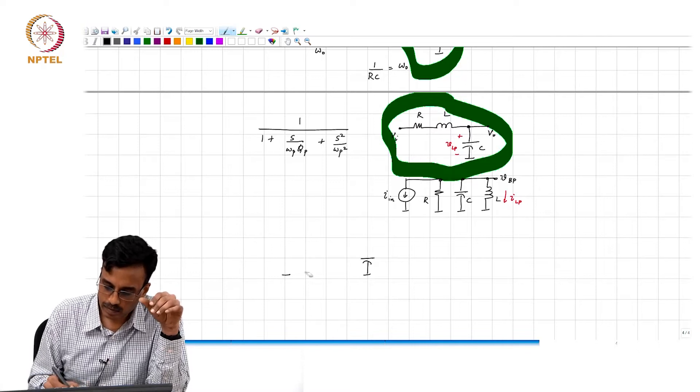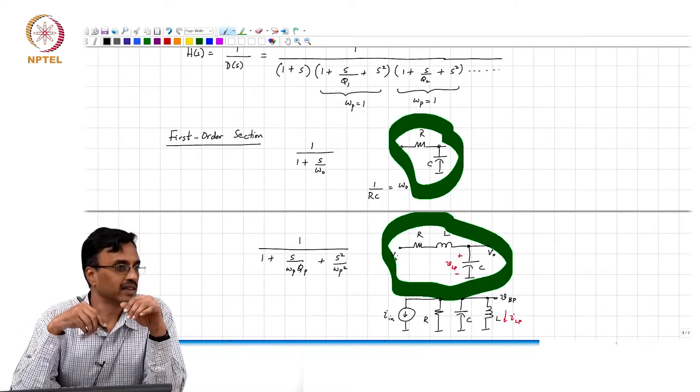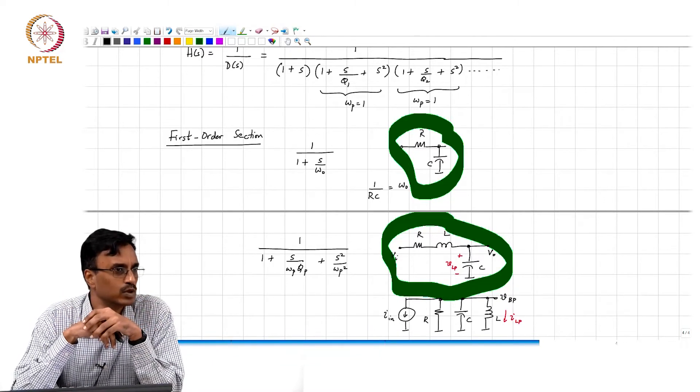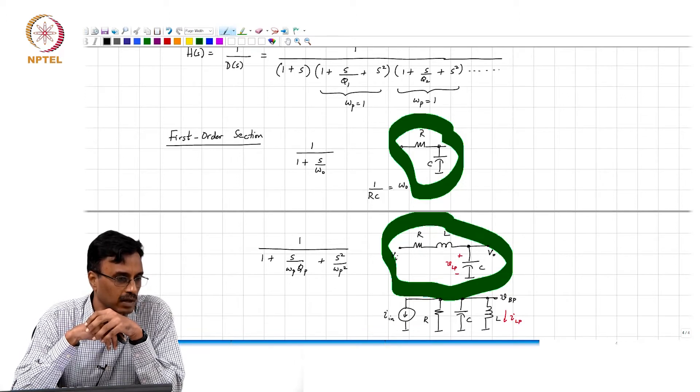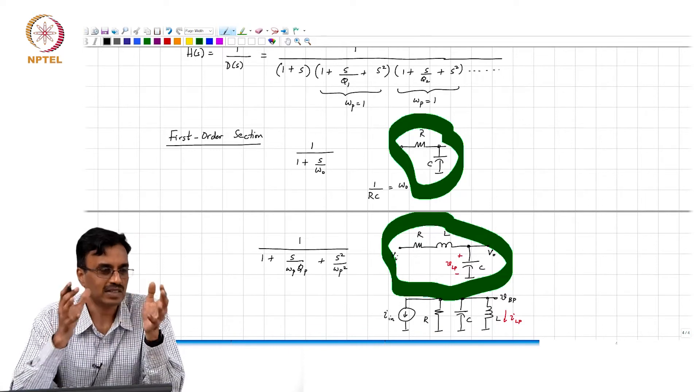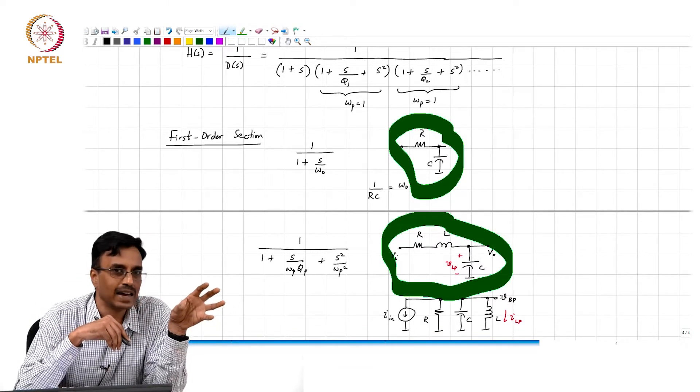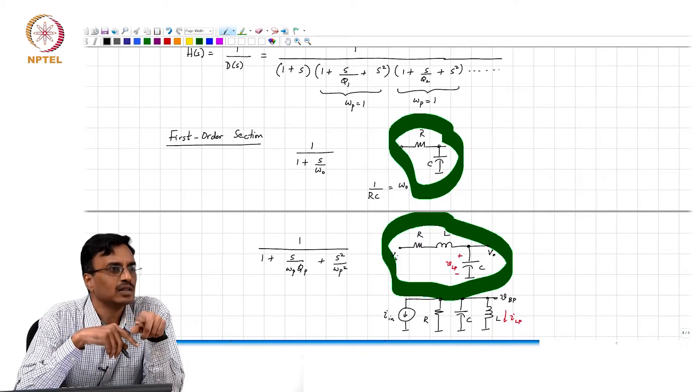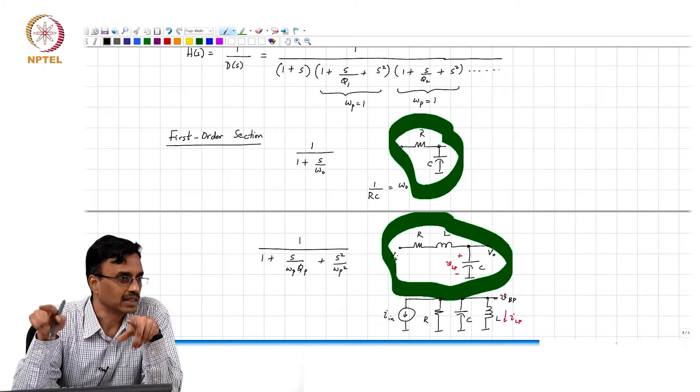Which is why people try to design sections where you can cascade the individual sections without having to worry about loading effects. In other words, the section itself must have either a high input impedance so that it does not load the next stage, or a low output impedance so that it can drive the next stage.